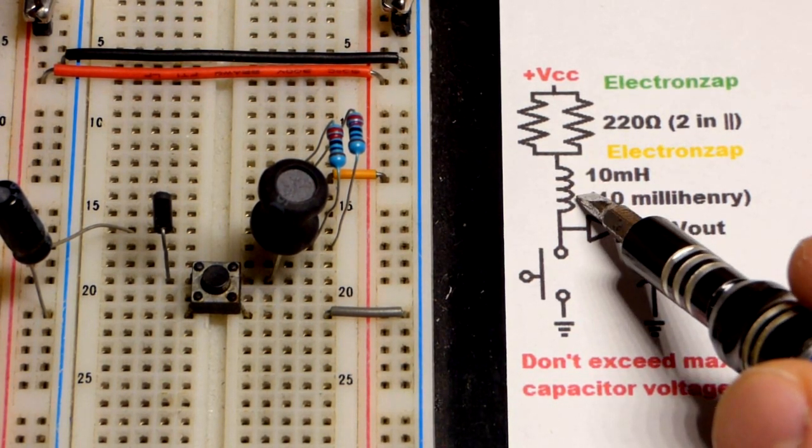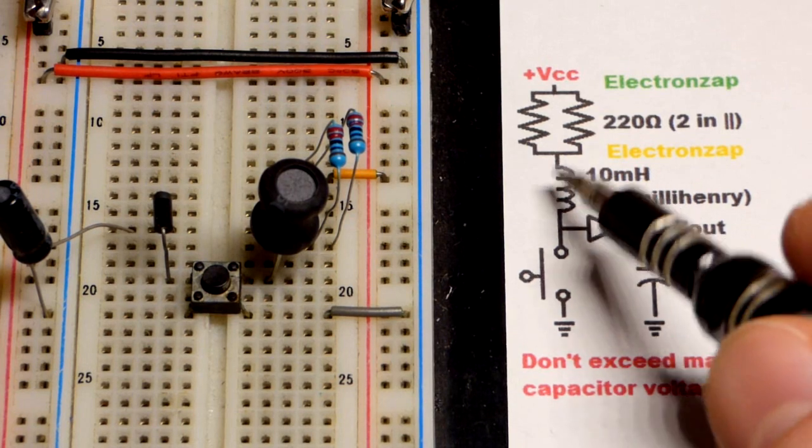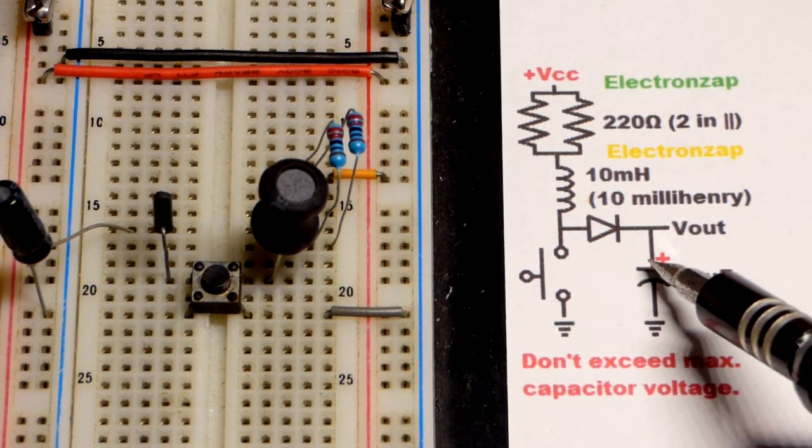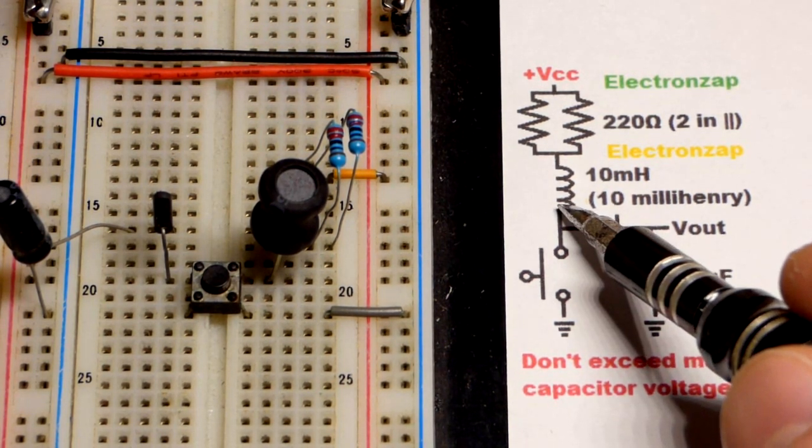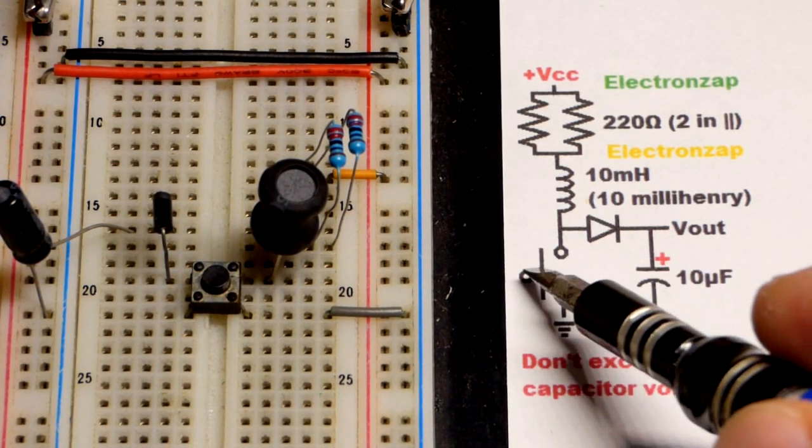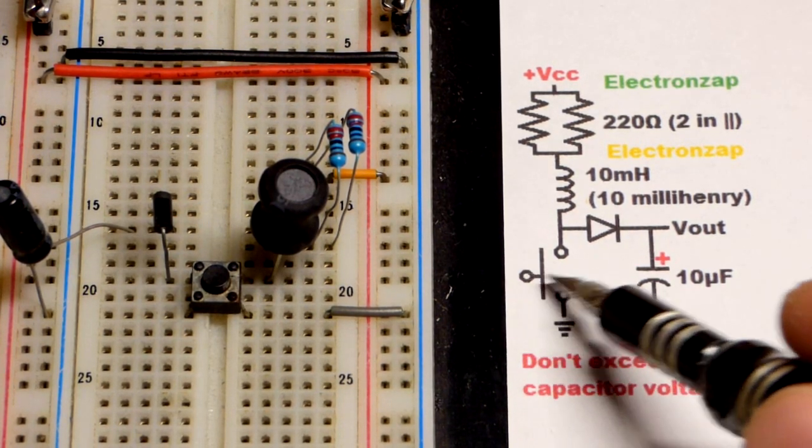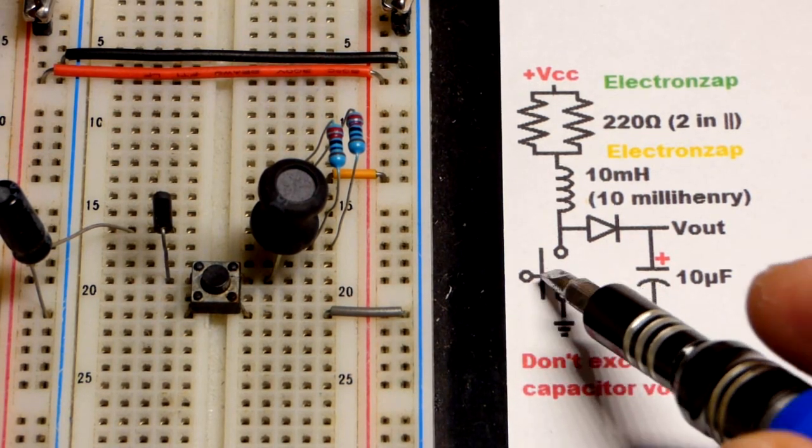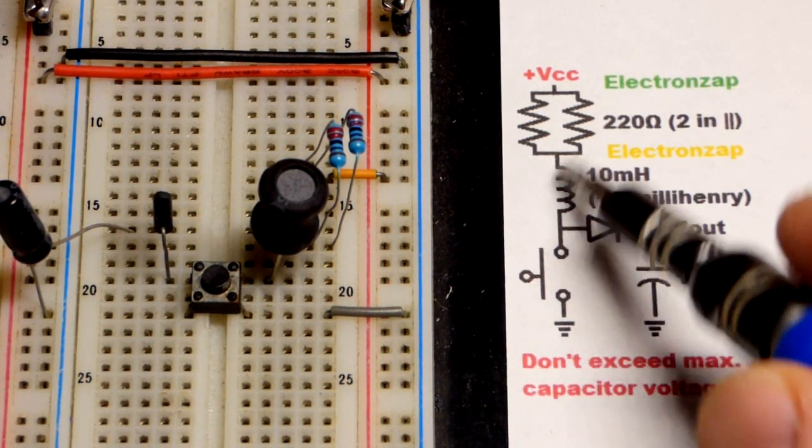Now of course the inductor has a magnetic field that collapses. It pumps a certain amount of current into the capacitor and then it's done - it doesn't have any more stored energy. So you got to keep repeating the process.